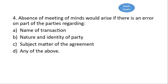The fourth question: absence of meeting of minds would arise if there is an error on the part of the parties regarding — the correct option is D — any of the parties to the transaction and the identity of the party or the subject matter of the agreement.